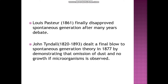Pasteur prepared meat broth by boiling it in a flask having a narrow, long and curved neck. In these flasks, air was able to enter, but the contained microbes settled in the gooseneck of the flask. Thus, only uncontaminated air was circulated in the flask. In such conditions, no organism originated in the meat broth. But if the gooseneck of the flask was broken, then contaminated air containing bacteria entered the flask and microbes appeared. Pasteur with this experiment conclusively showed that living beings do not have the property of spontaneous generation.